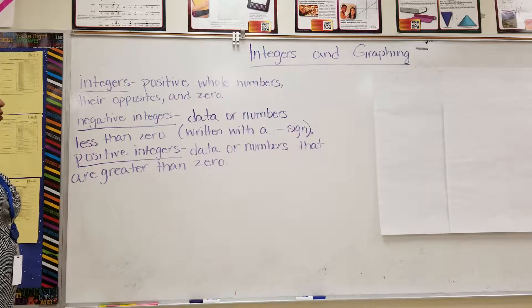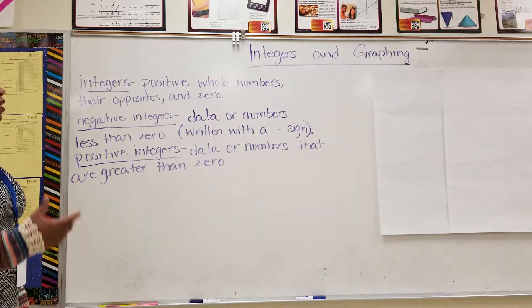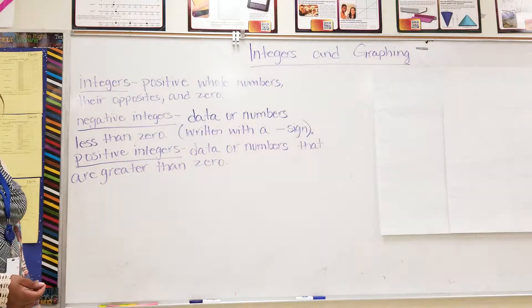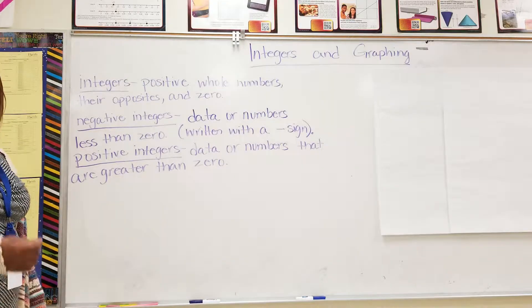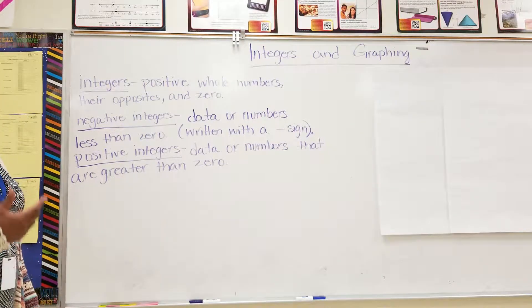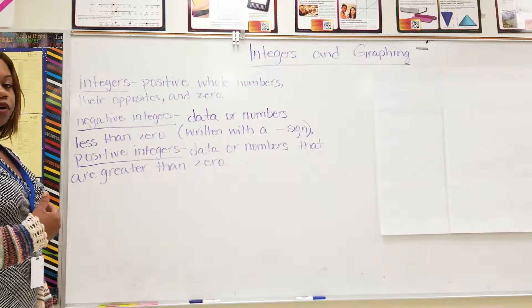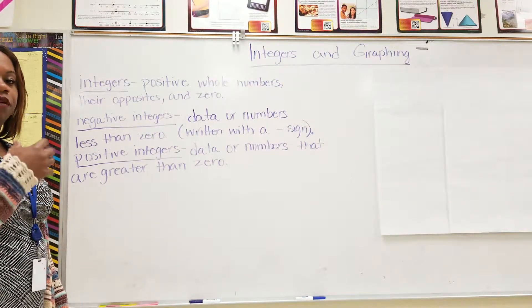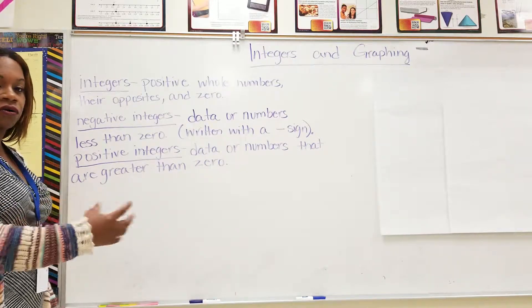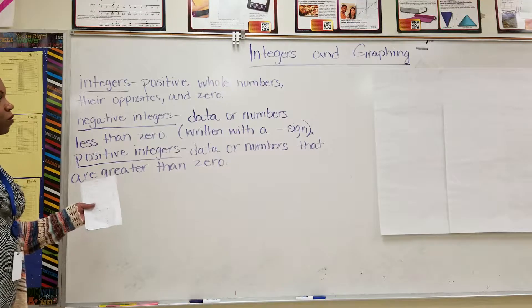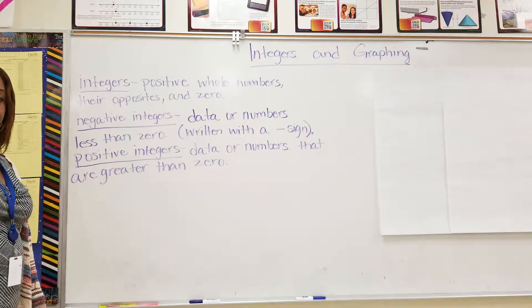Then we have negative integers. That is data or numbers less than zero, and it is written with a negative sign. So, any number less than zero, we represent that as a negative number. So, if I owe someone $5, that will be represented by negative 5 because I owe them money. And it's written with a negative sign — I'll put that more into context later.